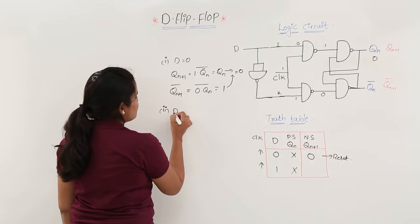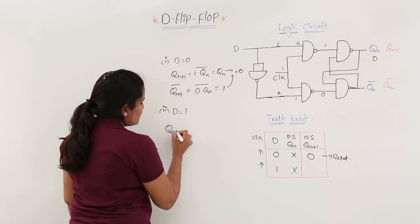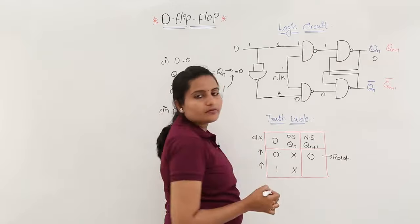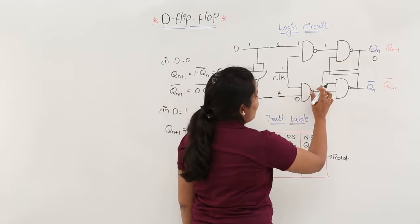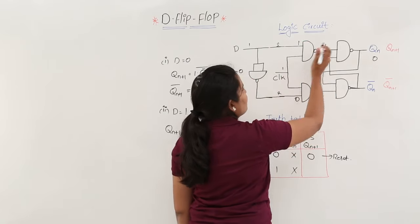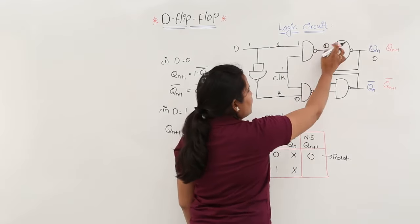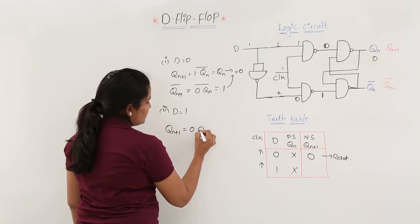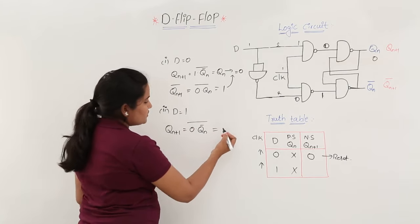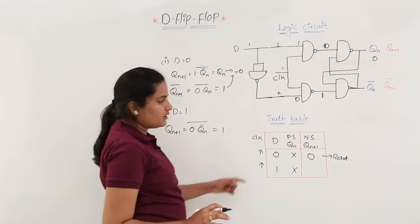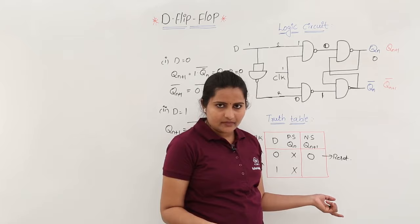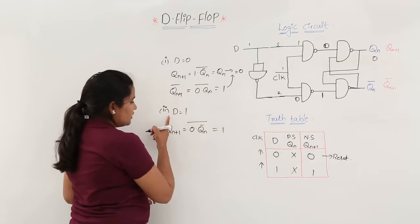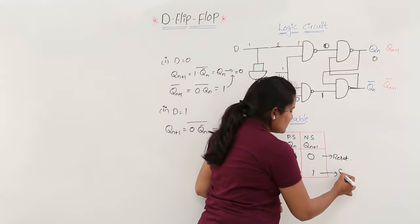The second case is D equal to 1. In this case, QN+1 needs to be defined. If D equals 1, that same 1 comes to the gate input and 0 comes to the other side after the NOT gate. Now 0 NAND clock gives 1 here, and 1 NAND 1 gives 0 here. QN+1 equals 0 into QN bar whole bar — 0 bar means 1. You got the value in QN+1 directly, so no need to go to the complement port. When D equals 1, QN+1 is equal to 1: that is the set state.